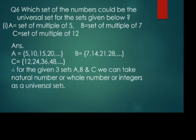Set B contains elements 7, 14, 21, 28, ... — multiples of 7. Set C contains multiples of 12: 12, 24, 36, 48, and so on. From these three sets A, B and C, all the numbers come under natural numbers, whole numbers, and integers as well, because integers include positive and negative numbers. So we can consider natural numbers, whole numbers, or integers as the universal set.